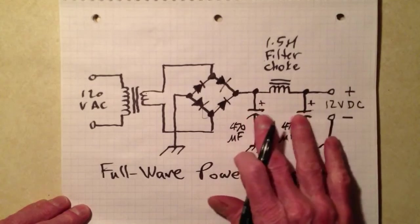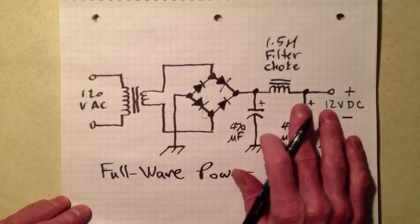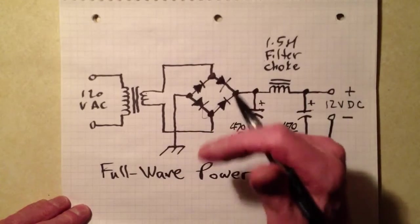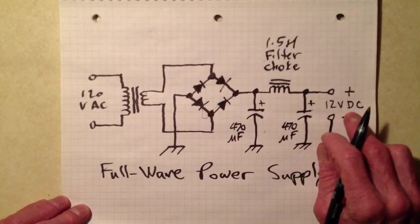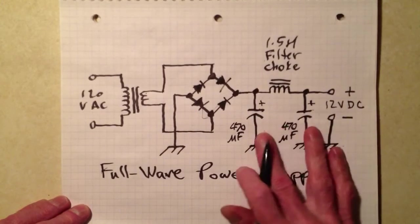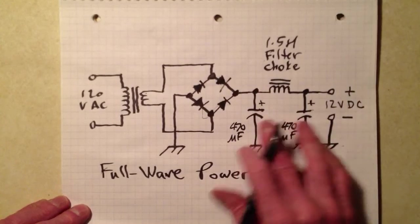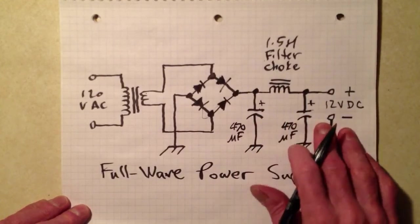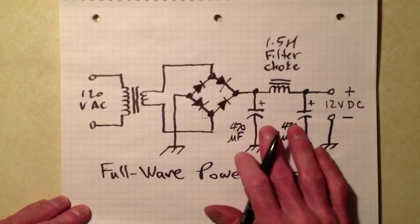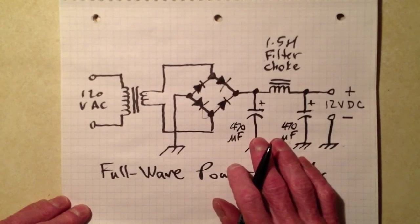So, these capacitors tend to hold the charge and smooth out that ripple by holding those peaks and not letting them drop. If you load down this supply way too much, though, this filter is going to start having trouble because these capacitors are going to discharge more and more quickly. And you may get some ripple unless you have to make bigger, have to put in bigger capacitors.